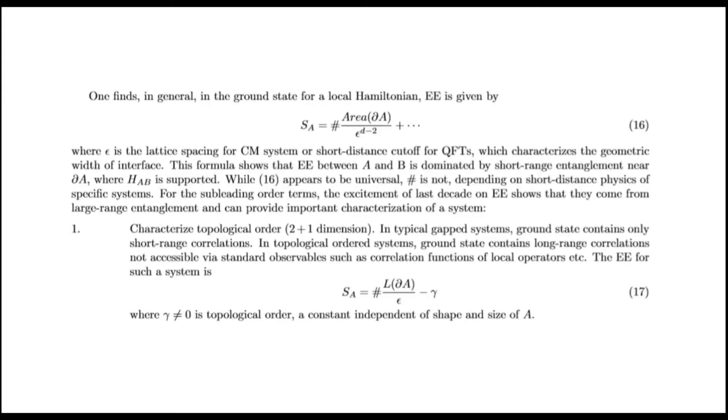Locality of interaction. One finds in general in the ground state for local Hamiltonian entanglement entropy is given by this, where ε is the lattice spacing for the lattice system or short-distance cutoff for quantum field theory, which characterizes the geometric width of interface. This formula shows that entanglement entropy between A and B is dominated by short-range entanglement near ∂A.